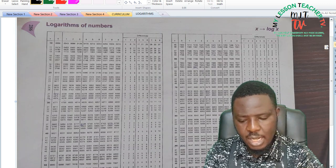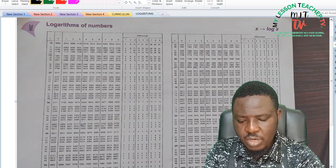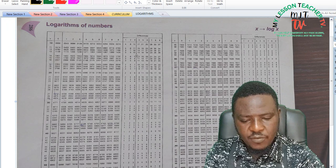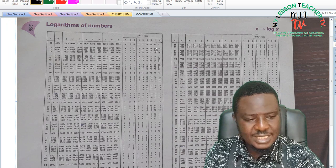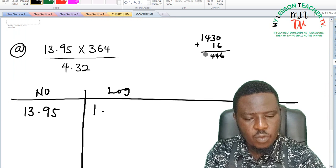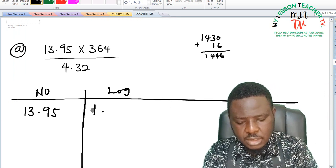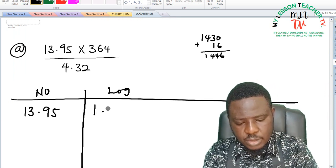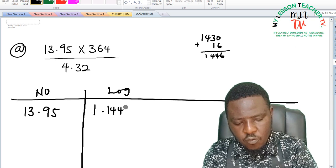I will then look for difference 5. Still go back to the logarithm table and check for difference 5 still under 13. Difference 5 is 16, so I am going to add 16 to it. And this is said to be 1446, so my answer is 1.1446.